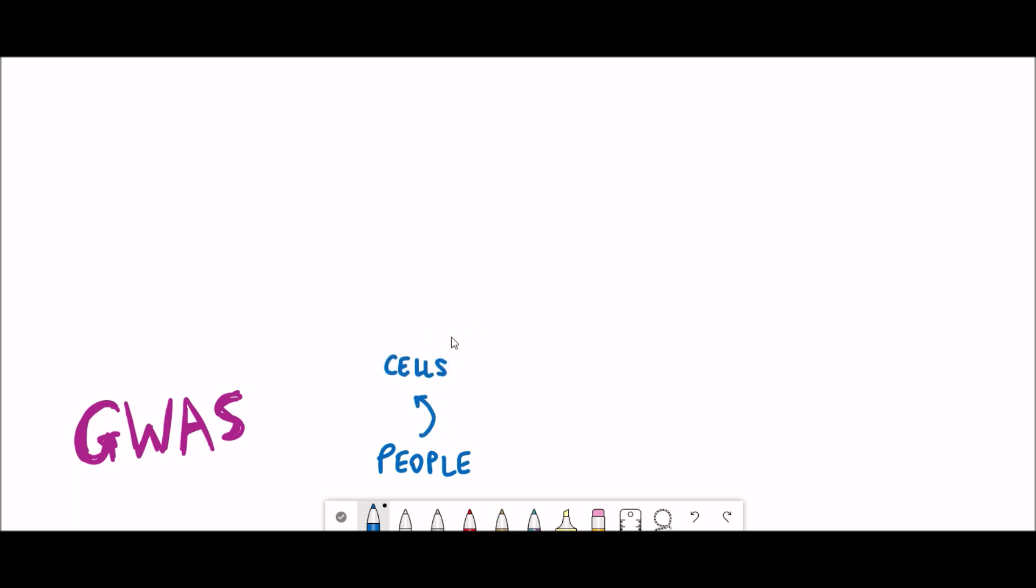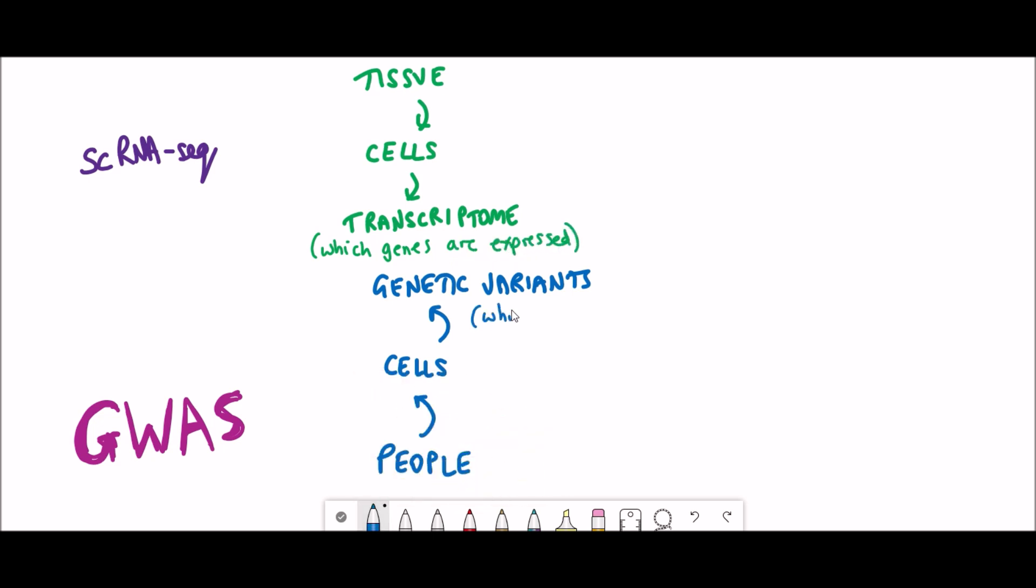One experiment is single-cell RNA sequencing data because with that information you can see which genes are being expressed in a cell and which cells from a certain tissue. If you can see the same subset of genes being expressed as the same subset of genes identified from a genome-wide association study, you have a fuller understanding and better confidence that the genes you're looking at are possibly associated with the phenotype you're studying.